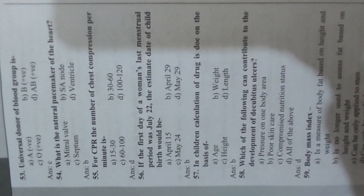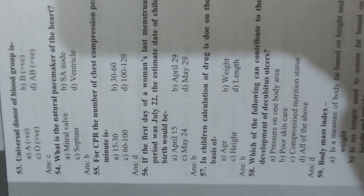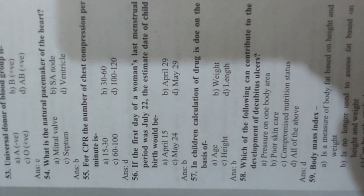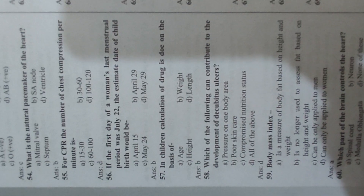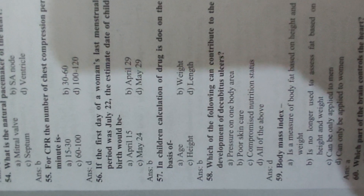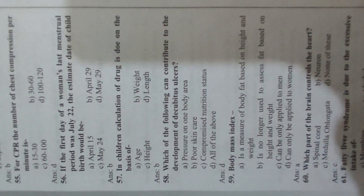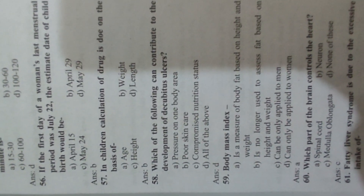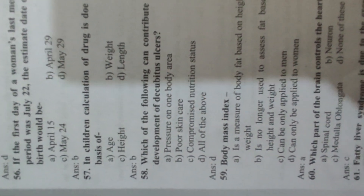Question 56: If the first day of a woman's last menstrual period was July 22, the estimated date of childbirth would be Answer D, April 29. Question 57: In children, calculation of drug dose is on the basis of Answer B, weight. Question 58: Which of the following can contribute to the development of decubitus ulcers? Answer D, all of the above.